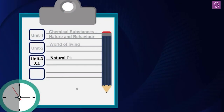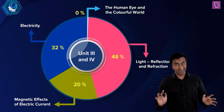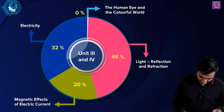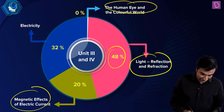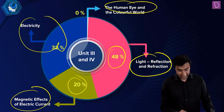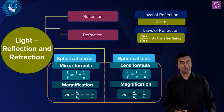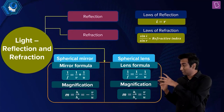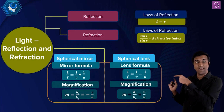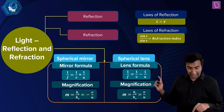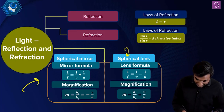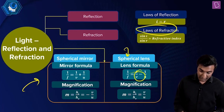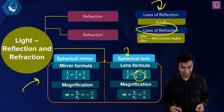The next unit is Natural Phenomena and Effects of Current — basically physics. From the weightage chart, light reflection and refraction is mostly there, magnetic effects of current, and electricity as well. For light, reflection and refraction: all those lens and mirror formulae — be careful about the signs. The formulae for a mirror and for a lens are slightly different. You've got the laws of refraction, laws of reflection — angle of incidence equal to angle of reflection. Practice the sign convention carefully.